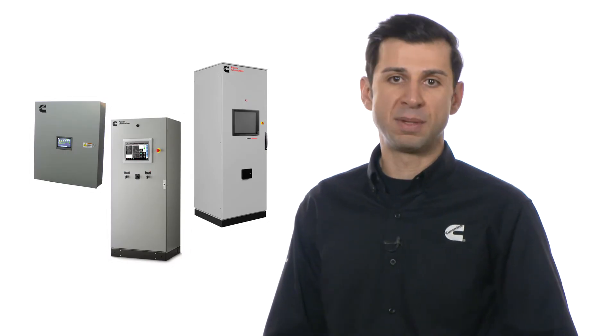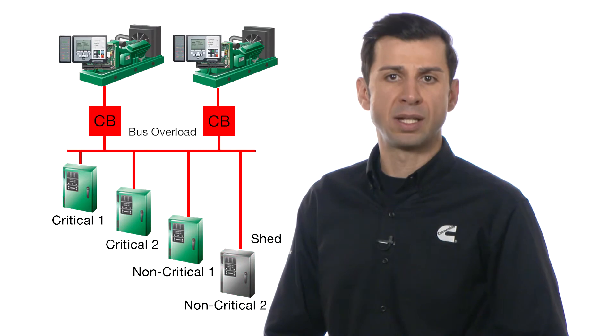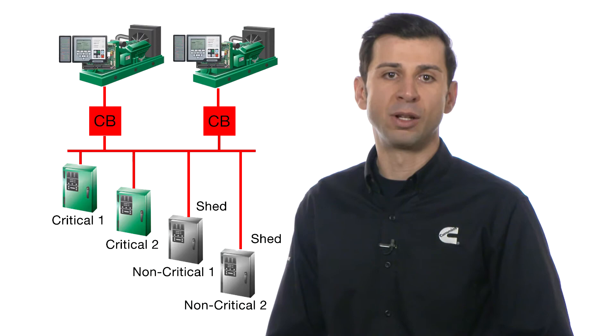The transfer switch can receive a load shed command from a generator or a system-level control such as a DMC. When the command is received, the ATS transfers the connected load from the generator to the center-off position to prevent the generator from becoming overloaded.